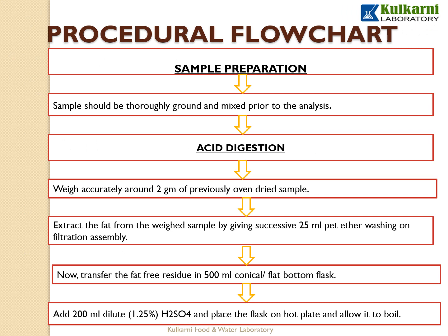Now the procedure. First is sample preparation: the sample should be thoroughly ground and mixed prior to analysis. The second stage is acid digestion. Weigh around 2g of previously oven-dried sample, then extract the fat from the weighed sample by giving successive 25ml pet ether washings on the filtration assembly. Transfer the fat-free residue into a 500ml conical or flat bottom flask.